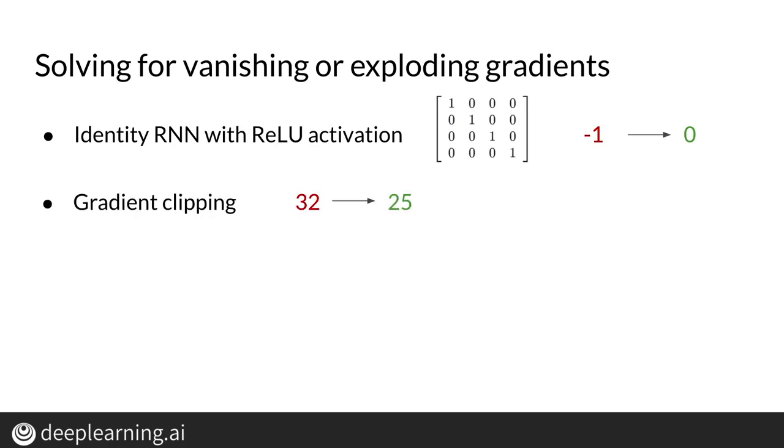The identity RNN approach only works for vanishing gradients though, as the derivative of ReLU is equal to 1 for all values greater than 0. To account for values growing exponentially, you can perform gradient clipping. To clip your gradient, simply choose a relevant value that you'll clip the gradient to, say 25. Using this technique, any value greater than 25 will be clipped to 25. This serves to limit the magnitude of the gradient.